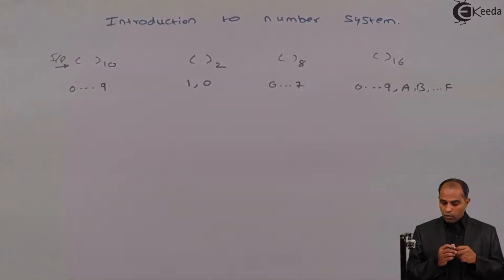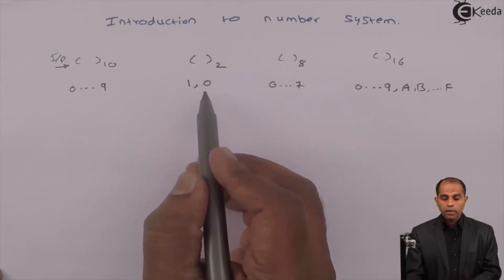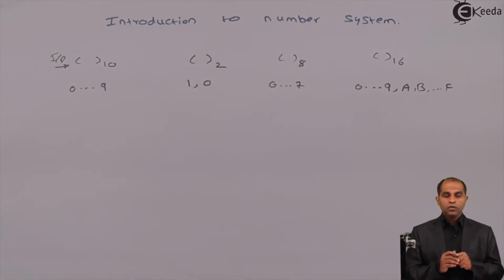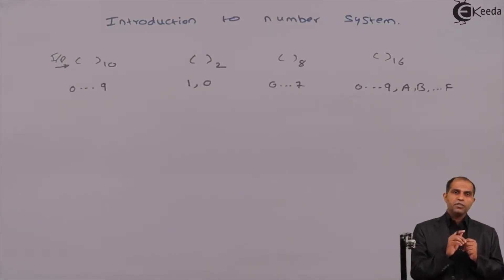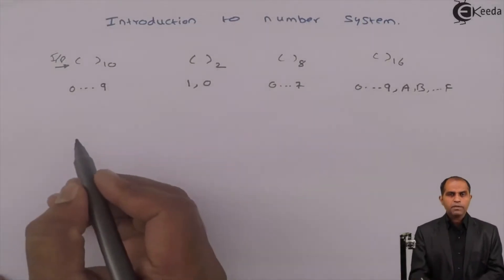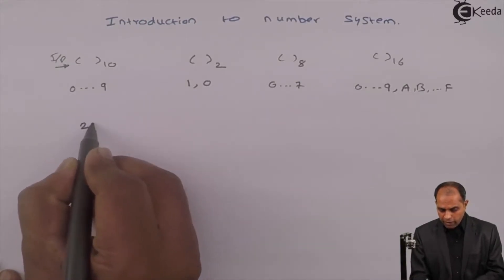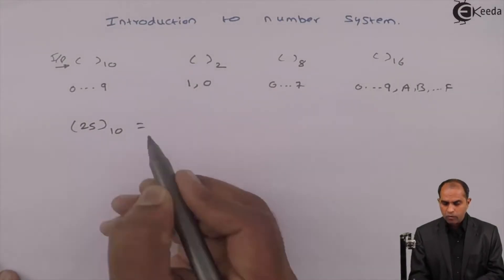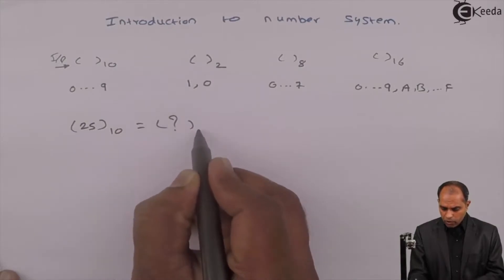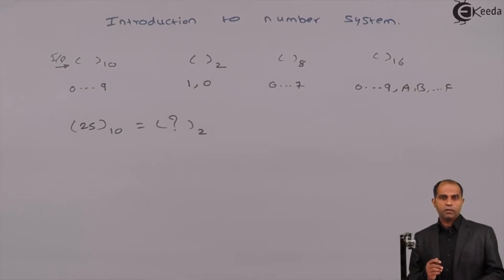To be more specific with this chapter, we will not go with octal and hexadecimal right now. We will only work with the binary system. In this, we are supposed to study how a decimal number is going to be converted to binary and how a binary number is going to be converted back to decimal. Let us take a simple example — suppose I have a decimal number 25 to the base 10. What will this be equivalent to in binary? How do I get this binary value?